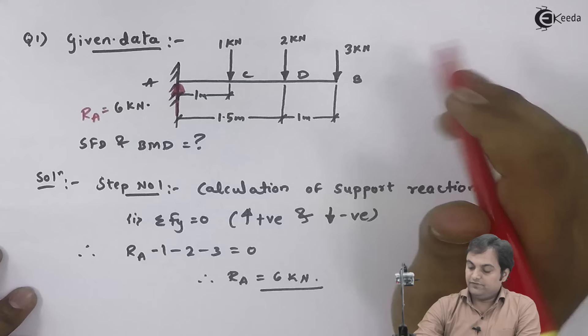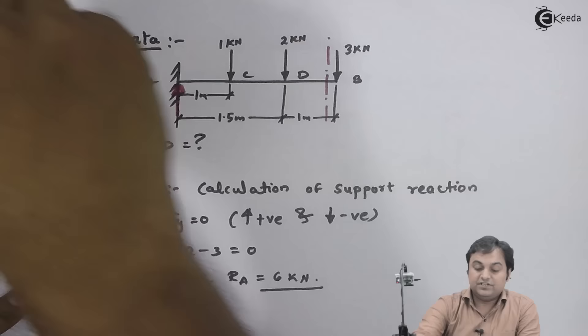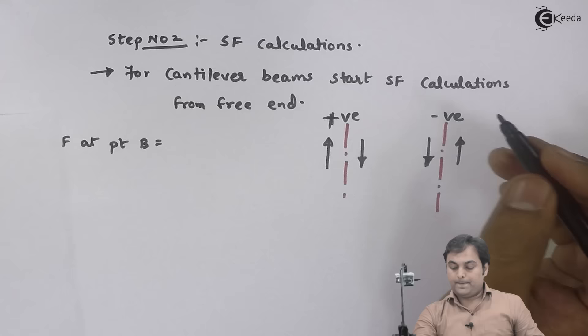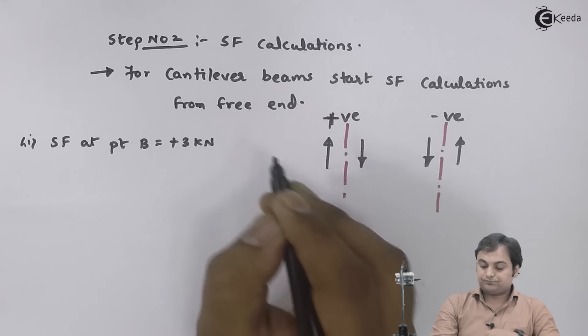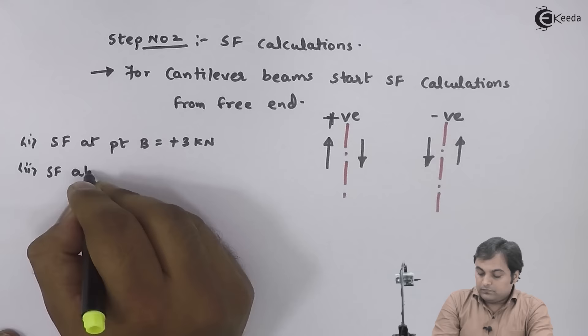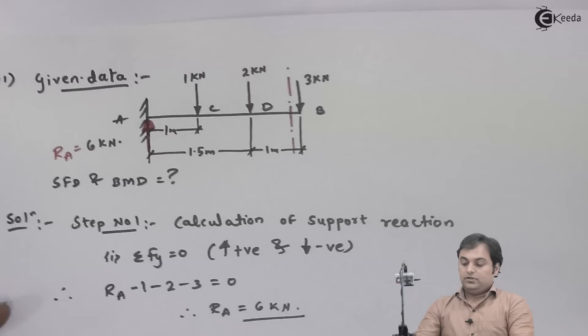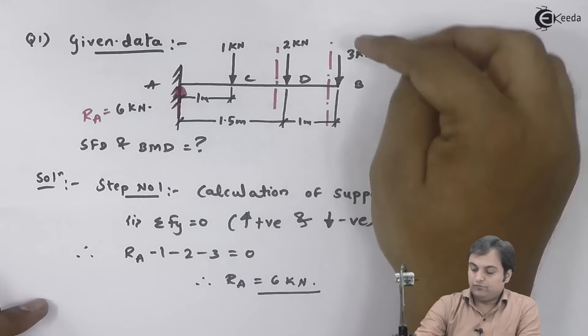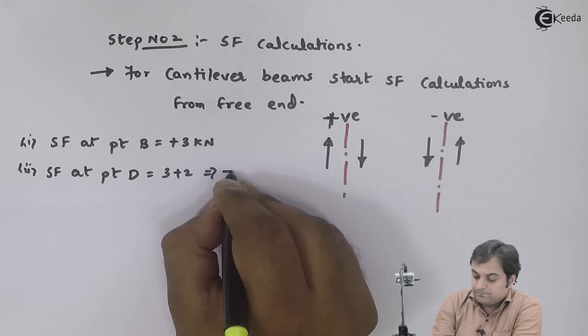Calculating shear force at point B: taking a section just to the left of B and looking to the right, there is a 3 kilonewton downward load. Downward load to the right is positive, so SF at B equals plus 3 kilonewtons. For shear force at point D, taking the section just to the left of D, there are two forces: plus 3 plus 2 equals plus 5 kilonewtons.